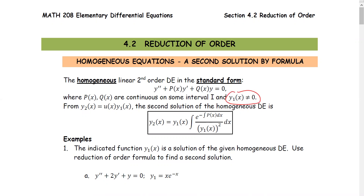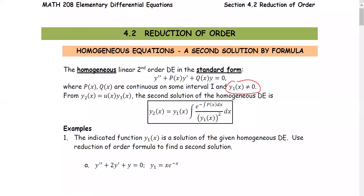From y2 equals the product of the function u and the first solution y1, the second solution of the homogeneous differential equation is y2 = y1 · ∫[e^(−∫p dx) / y1²] dx. This formula is called the reduction of order formula.